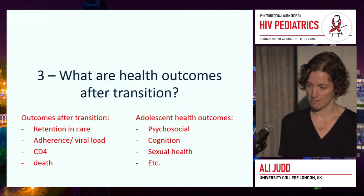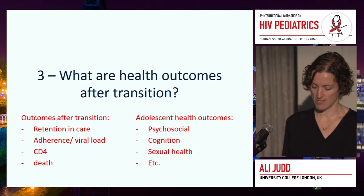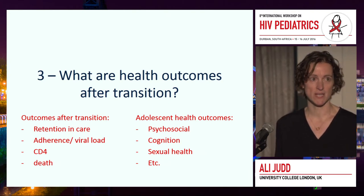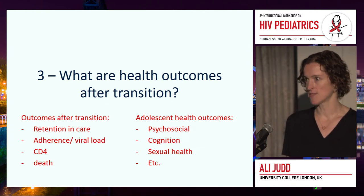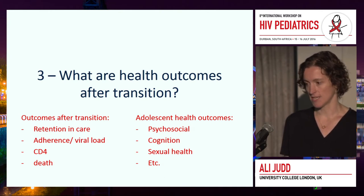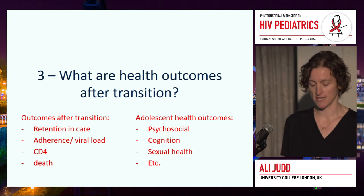So what are the health outcomes after transition? We first thought about focusing on transition outcomes, primarily retention and adherence. But the key thing to say is that there are very limited data on outcomes after transition, despite having all of those children and young people in cohort studies. This is partly because many paediatric cohort studies were designed a long time ago when we didn't expect children to survive into adulthood, so they were set up on their own rather than being embedded into adult cohort studies. One challenge now is data linkage.